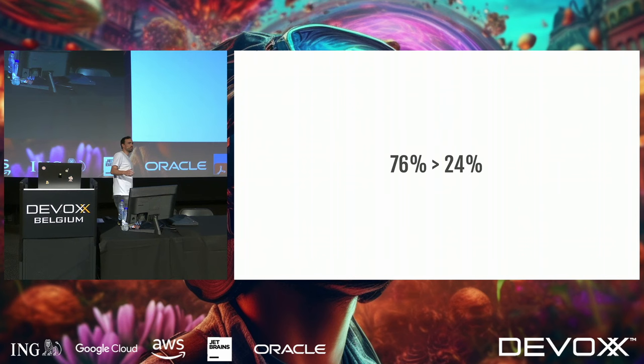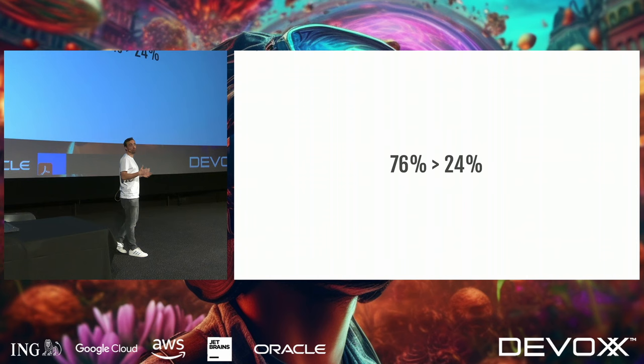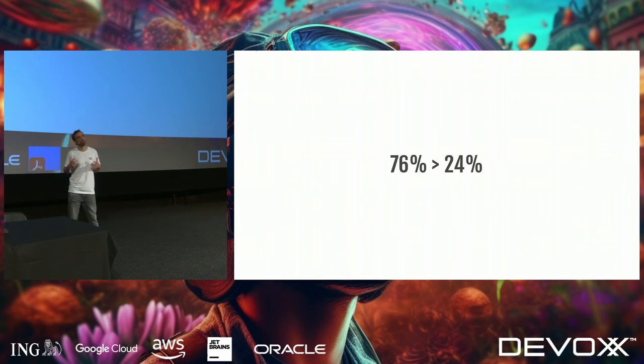According to a recent survey, 76% of software engineers indicate that they are actually interested in machine learning — they wanted to know and learn how to do machine learning. Unfortunately, only 24% of those software engineers indicated that they actually have the feeling that they succeeded.